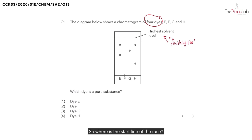Let's write this down. So where is the start line of the race? This here, the one I've indicated with a purple arrow, that is the start line. And the start line is where I will put a tiny drop of the sample, just like the one that we see on F here. This chromatography paper is dipped into the solvent.